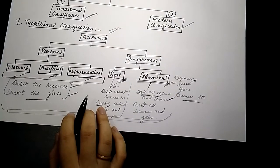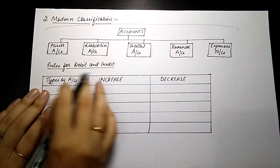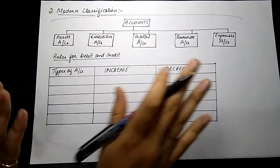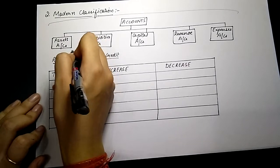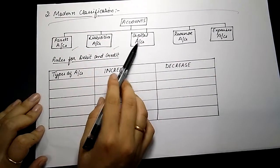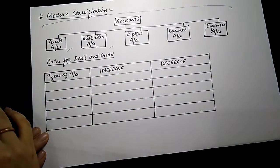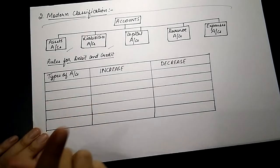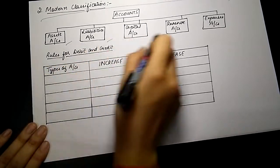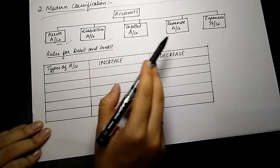Now what is modern classification? In modern classification, we have five heads: asset account, liabilities account, capital account, revenue account, and expenses account. In traditional classification, we had three types of accounts — personal, real, and nominal. In the modern approach, we have distributed these into five classifications.